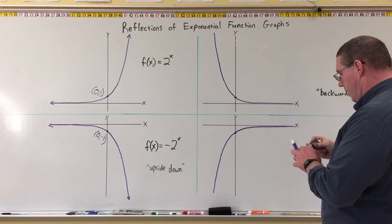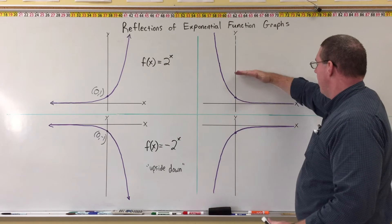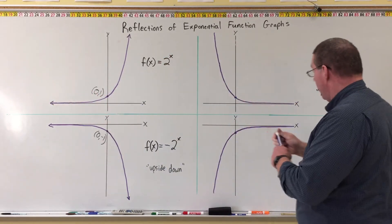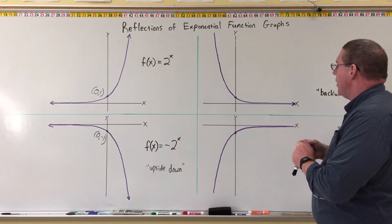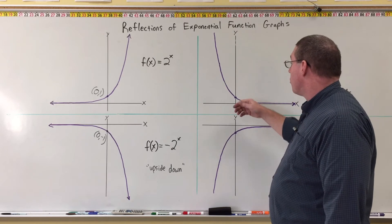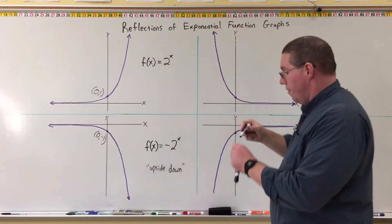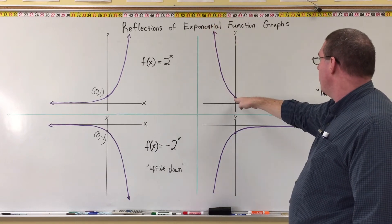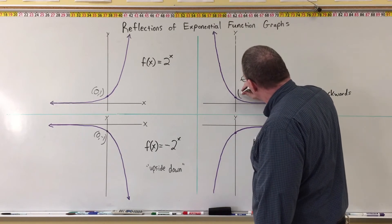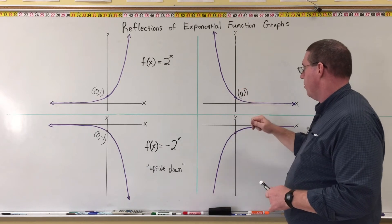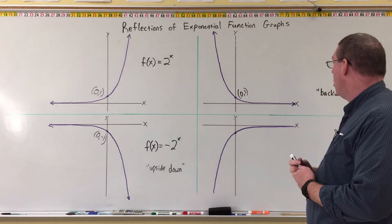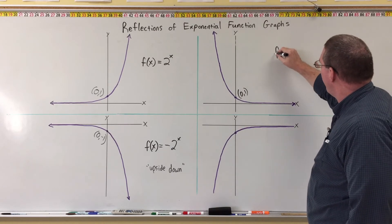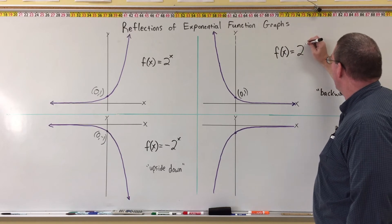The "backwards" graph is still above the x-axis, just like the original. Only instead of being flat to the left, this one is flat to the right. And instead of getting steep to the right, it gets steep to the left. It starts out steep, then comes down and goes through the point (0, 1). Because it's above the x-axis, it's still going through (0, 1). Then it becomes flat and approaches zero as it goes to the right.